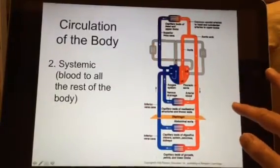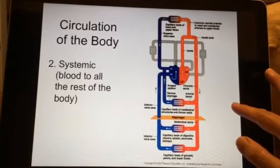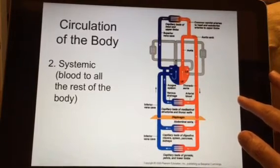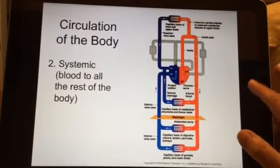This is the second type of circulation in the body, thus making it a double pump. This is what we call systemic, which means the heart pumps blood to all the rest of the body. That's what systemic means, is body-wide.